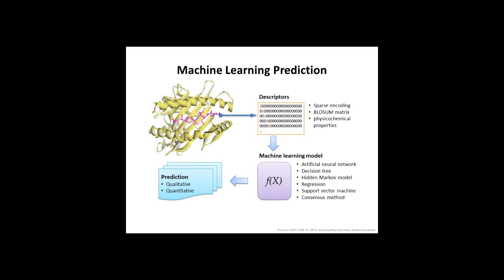To formulate methods to predict the binding between an HRA molecule and a peptide, the peptide is converted to a group of numbers, also known as descriptors. There are three popular types of descriptors: sparse encoding, blossom matrix, and physical chemical properties. After this conversion, the descriptors are sent to the machine learning model for prediction.